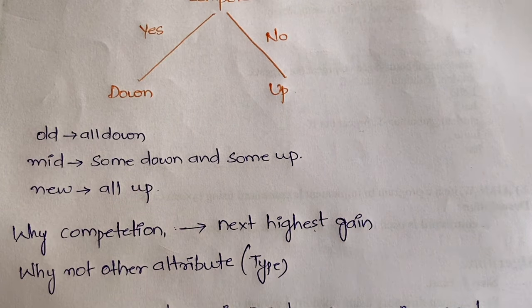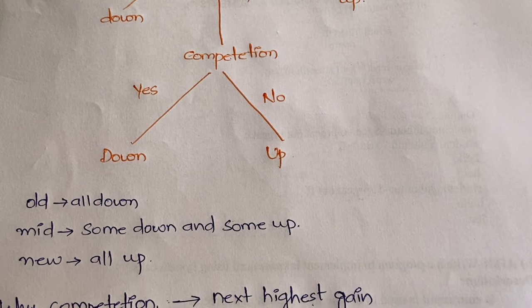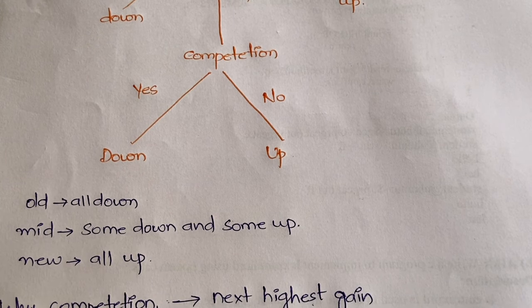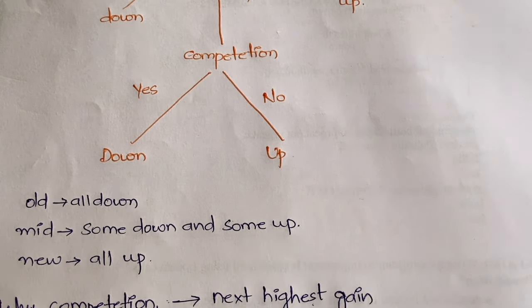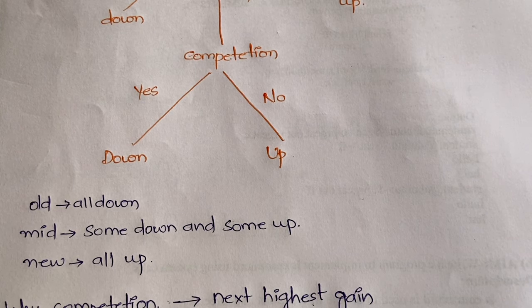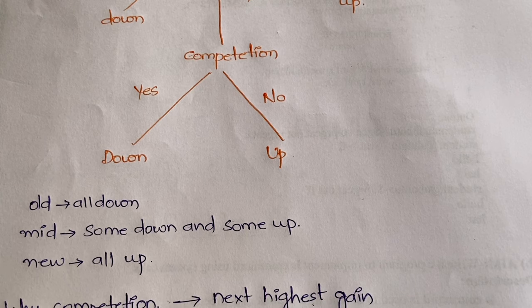You have to go for the next highest gain. If you are having some contradictions in competition also, if you are not able to arrive at a conclusion even by taking competition, you have to go for the next attribute. But here, competition was enough for us, so we need not think of type.